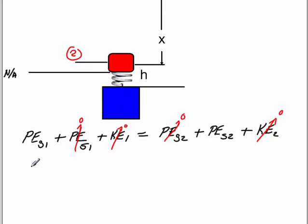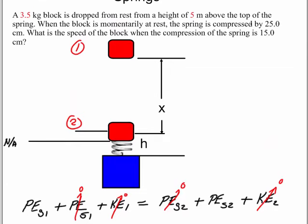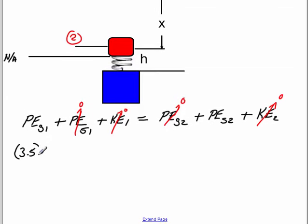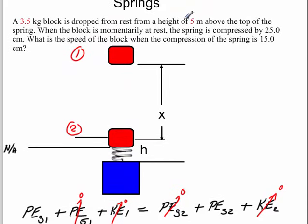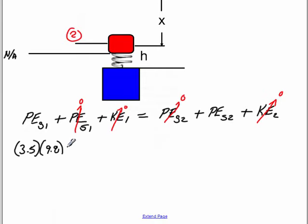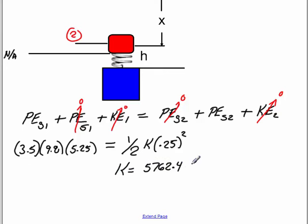Now to do the gravitational potential it's going to be the mass of the block which is 3.5. We will multiply that by 9.8. Now the distance you're going to drop that is going to be 5 plus 0.25 meters or 25 centimeters. So we make that 5.25. We go right over here and now our spring potential is going to be 1/2 times k times the full deflection 25 squared. From this we will solve for k. If you do your math you should get 5762.4 newtons per meter. So that is going to be your spring constant.